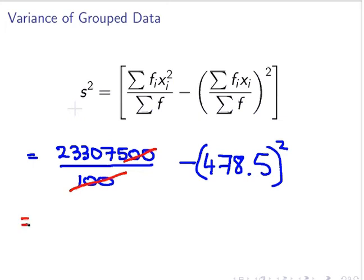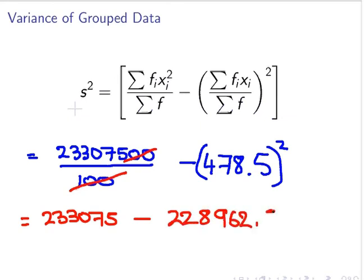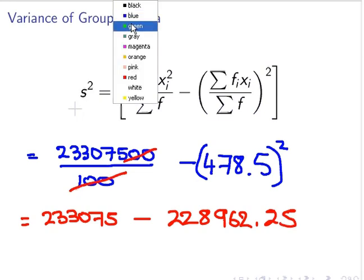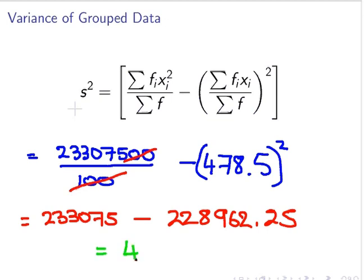So this simply simplifies out that we get left with 233075. So this is equal to 233075 minus that squared. We would get 2289625. And that is equal to 4112.75. So that is the variance there. That's our answer. That's the variance.